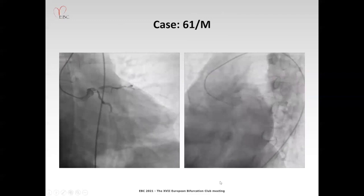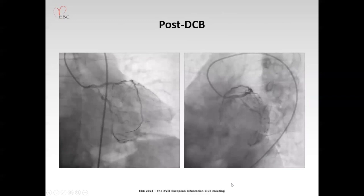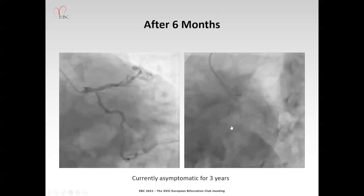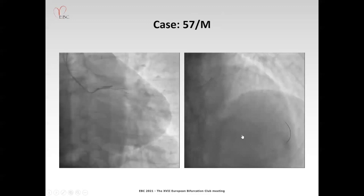This is a 61-year-old man with a very tight stenosis in left main bifurcation. After assessment by IVUS, balloon angioplasty was performed from left main to proximal LAD and treated with a drug-coated balloon. Although some residual stenosis remains, the procedure was finished because the lumen was much bigger than baseline. After six months, left main stenosis was not observed. This patient has been well for three years without any angina symptoms.